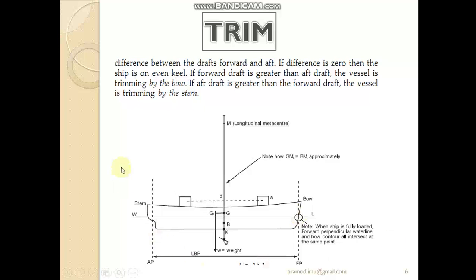Here we have a vessel shown in the longitudinal frame. We can see the line connecting keel K, center of buoyancy B, center of gravity G, and ML — the longitudinal metacenter. This is the metacenter considered in the longitudinal direction when we study the longitudinal stability of ships.